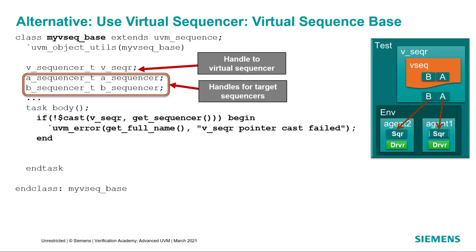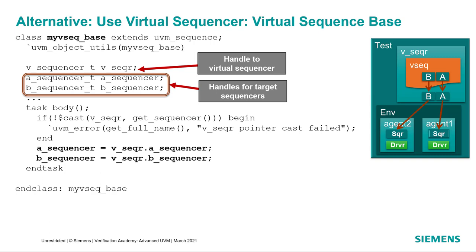In the body task, the first thing we have to do is make sure that the sequencer pointer is of the correct type. Every sequence has a built-in sequencer pointer assigned when the sequence is started on a sequencer — in this case a virtual sequencer — which is returned by getSequencer. We cast this to the VSeqer to provide context to the virtual sequence when it calls its sub-sequences. Now we can assign the sequencer handles to the appropriate sequencers, but notice that these are all relative to the VSeqencer handle in the virtual sequence base type. This lets the virtual sequence and corresponding virtual sequencer run in any environment that has agent sequencers of the required types.